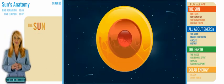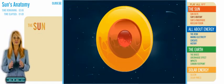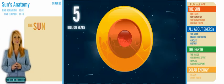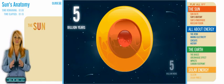This process has been going on in the Sun for about 5 billion years. And scientists have calculated that there is enough hydrogen up there to keep the Sun going for about 5 billion more.